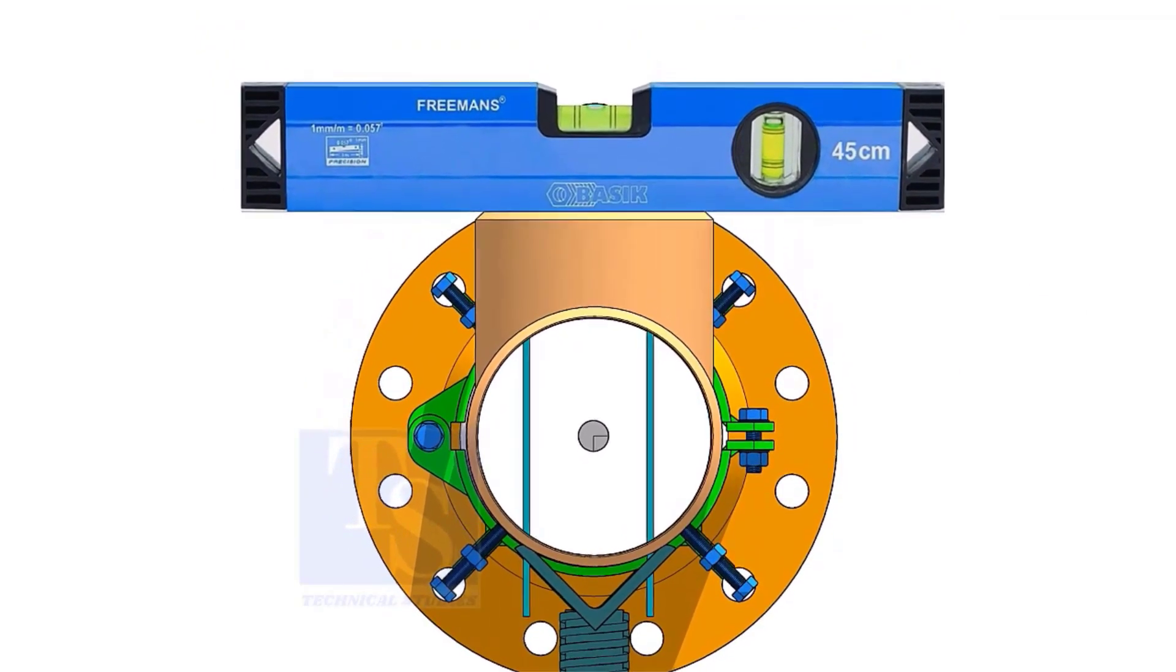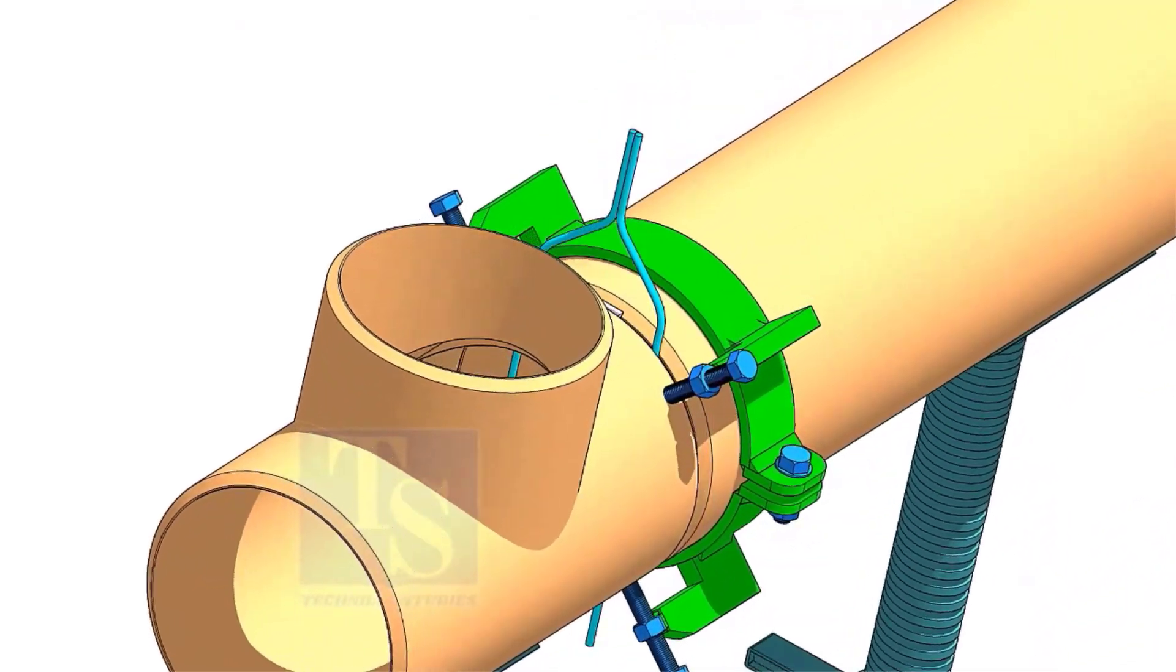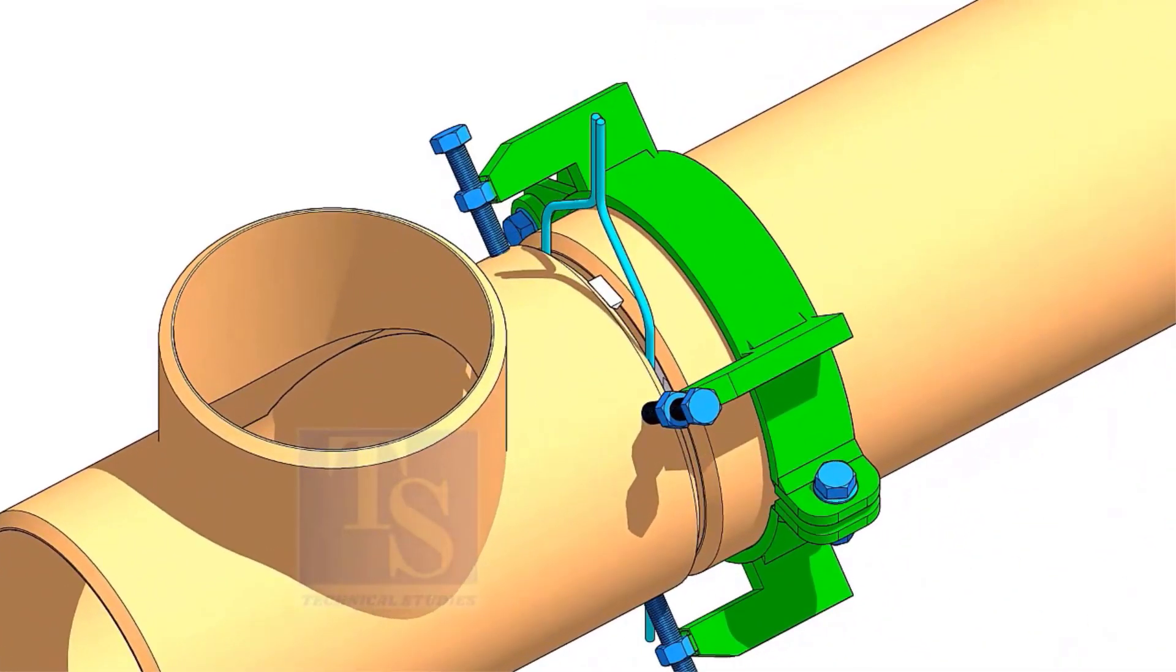Check the level of the tee. Tack weld on the top of the joint.